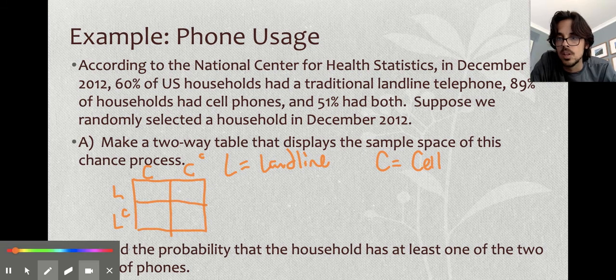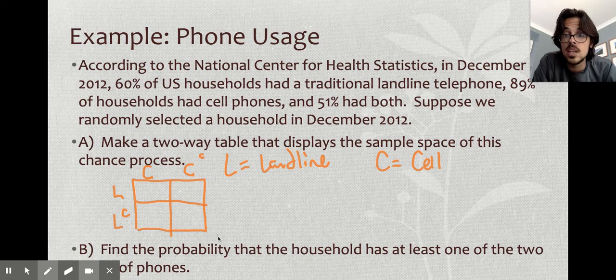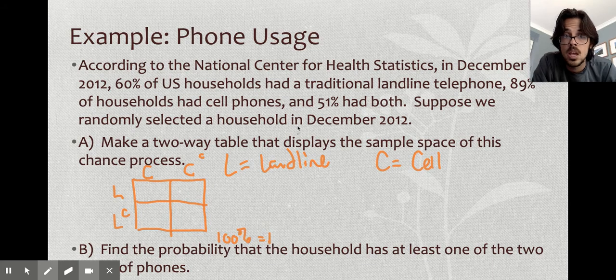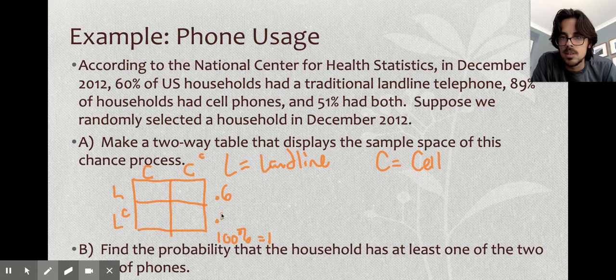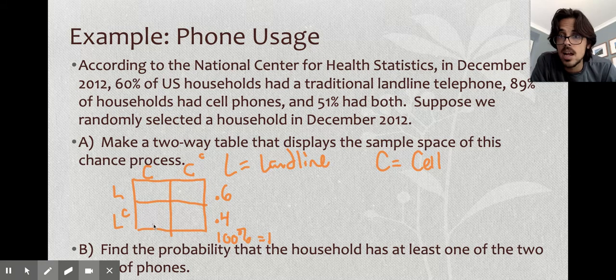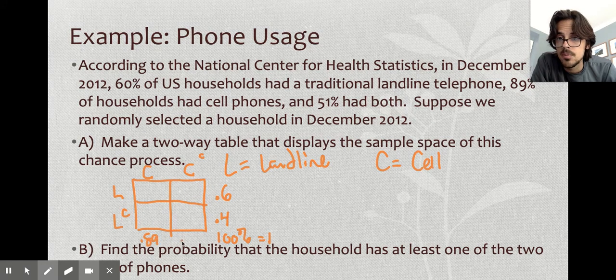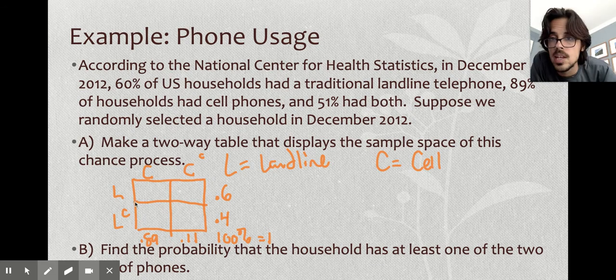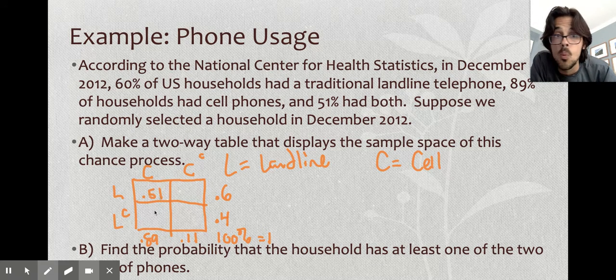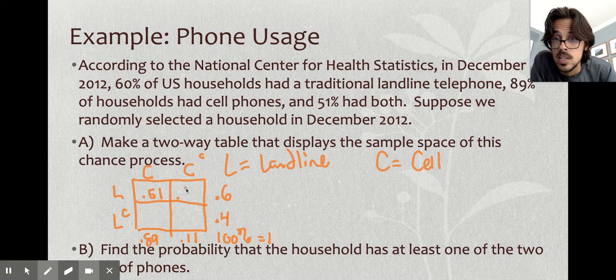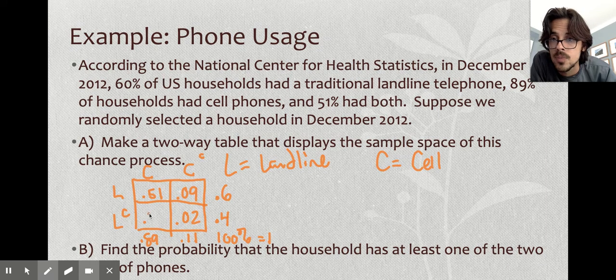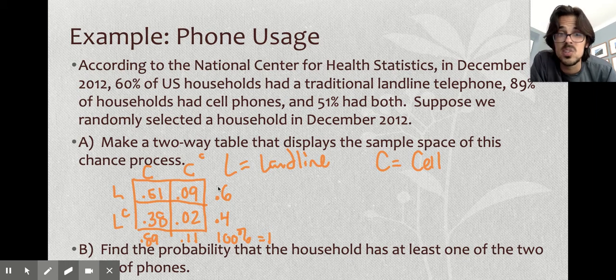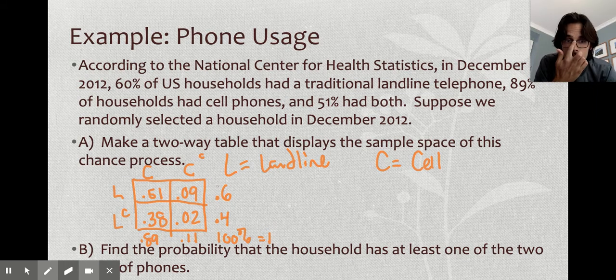This time they didn't give me raw numbers like the last one. They gave me percentages. So if they give me percentages, then obviously the total is going to be out of 100% or one. It says 60% had landlines. So 60% landlines. That means this is already going to be a 40% right here. 89% had cell phones. So 11% go here. And it says the number on the inside is that 51% have both. Once you know a number on the inside, you just start subtracting and doing easy math. And you just set up your problem basically. And it's pretty straightforward getting this all filled out. So I've got all my inside numbers.